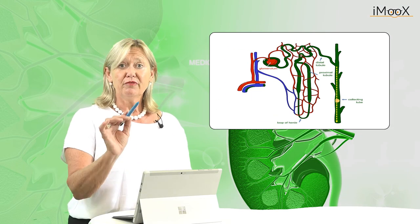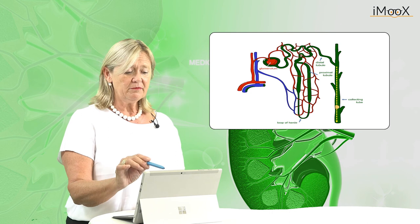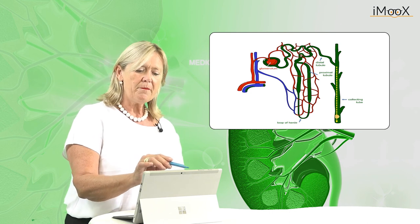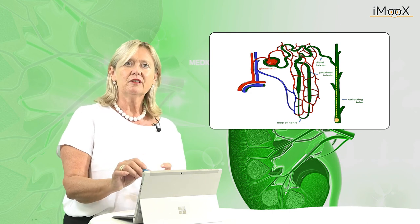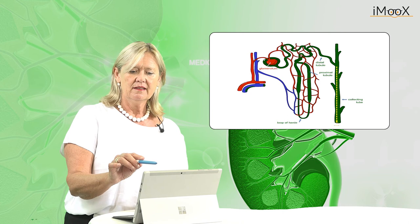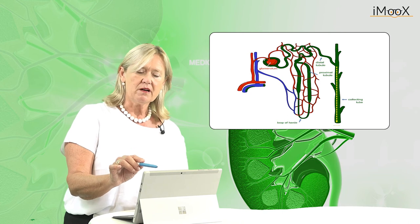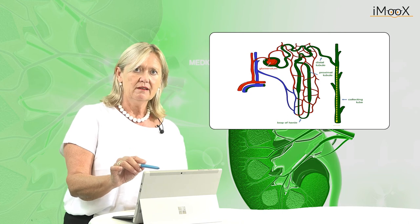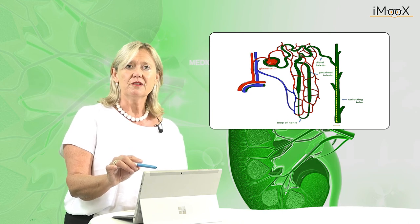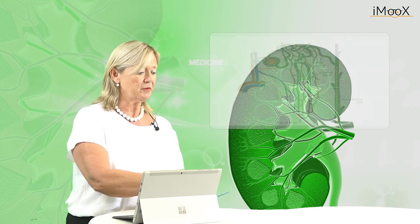Finally, before entering the bladder, the filtrate passes through the collecting duct of the kidney. In this part of the kidney, water and solutes are once more reabsorbed.